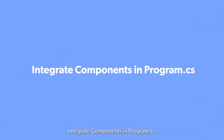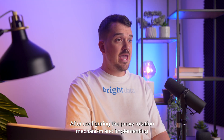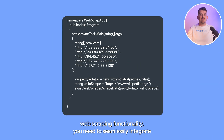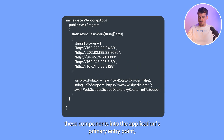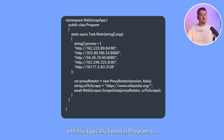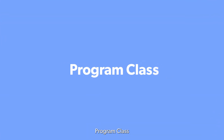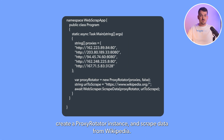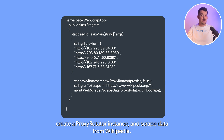Integrate components in program.cs. After configuring the proxy rotation mechanism and implementing web scraping functionality, you need to seamlessly integrate these components into the application's primary entry point, which is typically found in program.cs. Use the code example provided to initialize proxies, create a proxy rotator instance, and scrape data from Wikipedia.